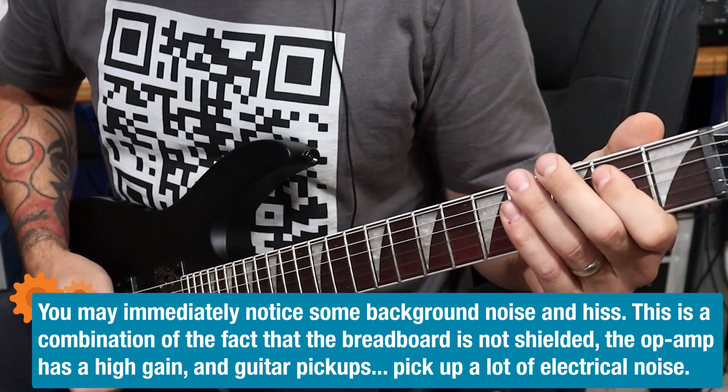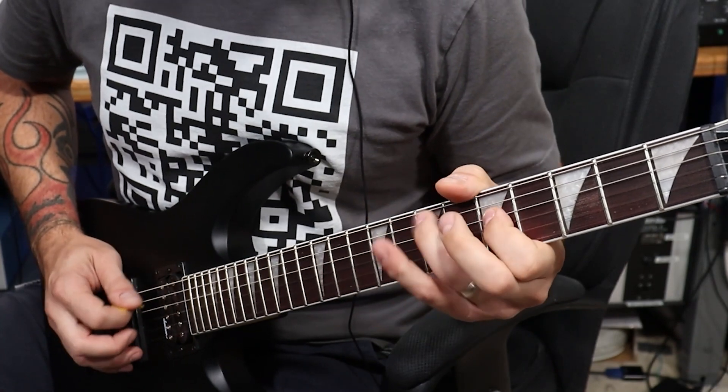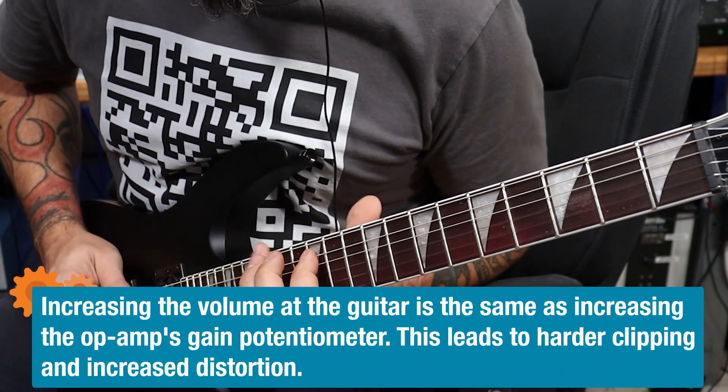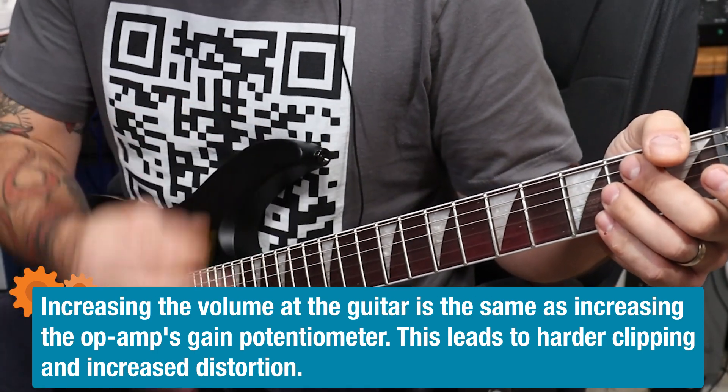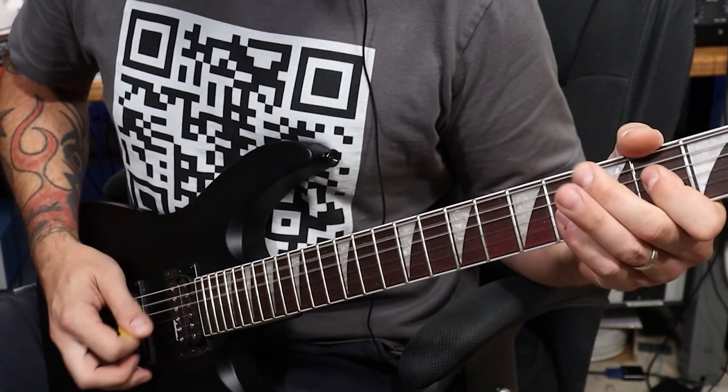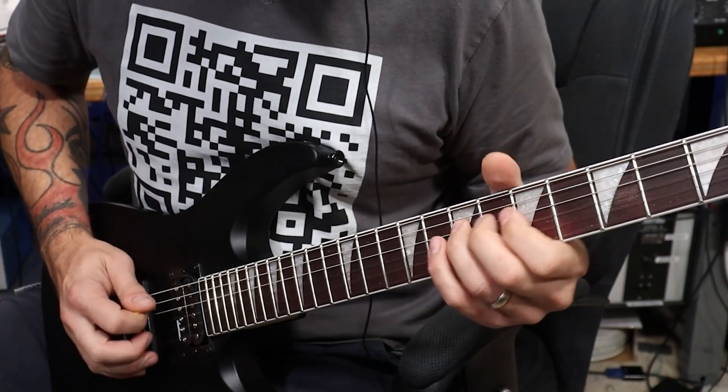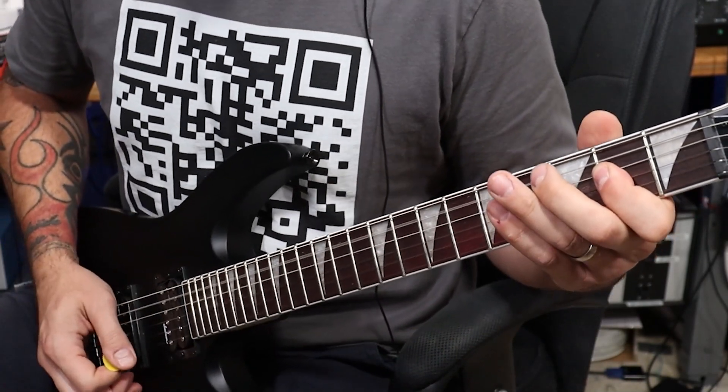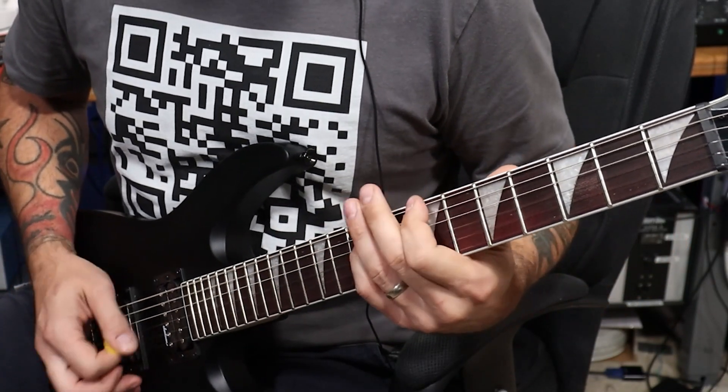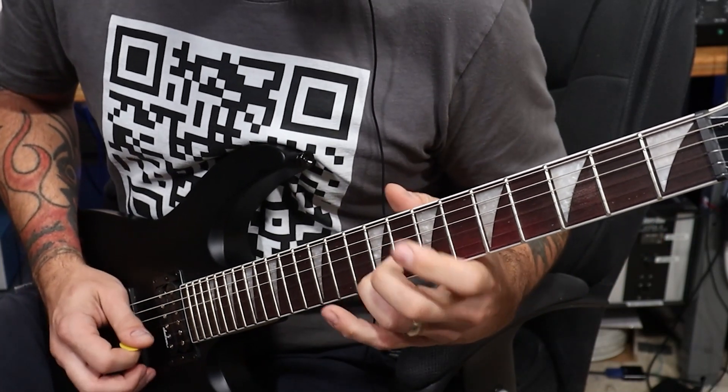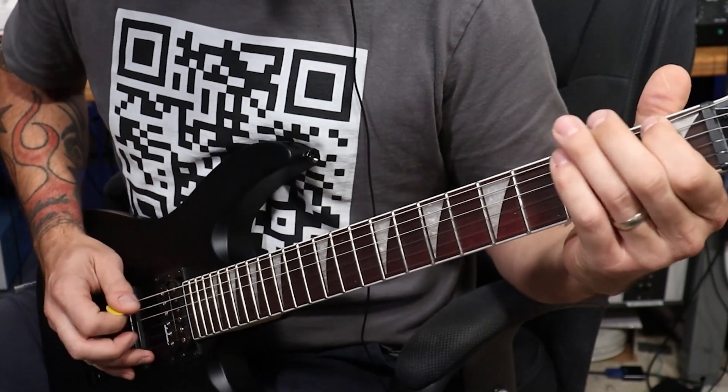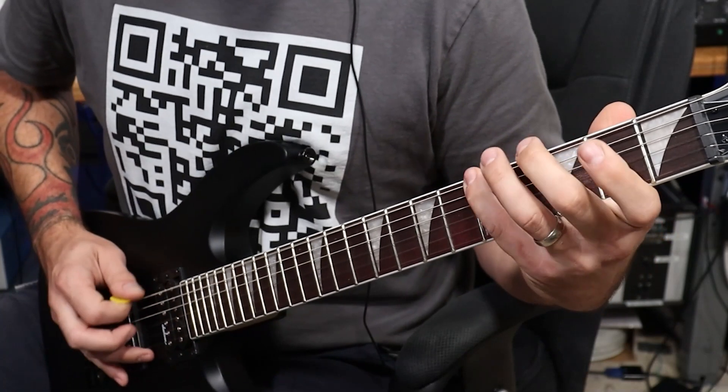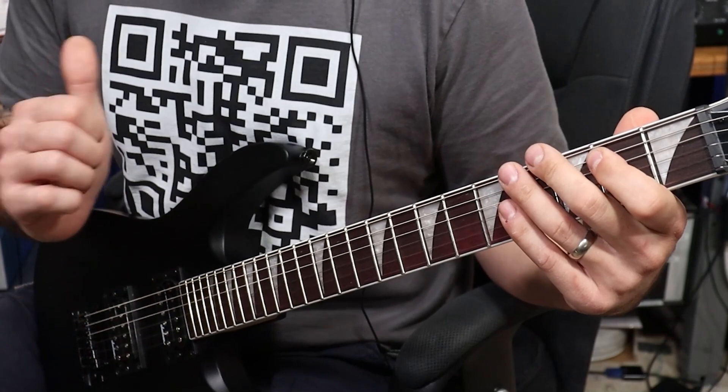So we've got distortion on. I'm just going to roll the volume up a tiny bit. A little more. So there's a little bit of crunch there. Let's give it a little bit more gain. Let's go into full metal mode.